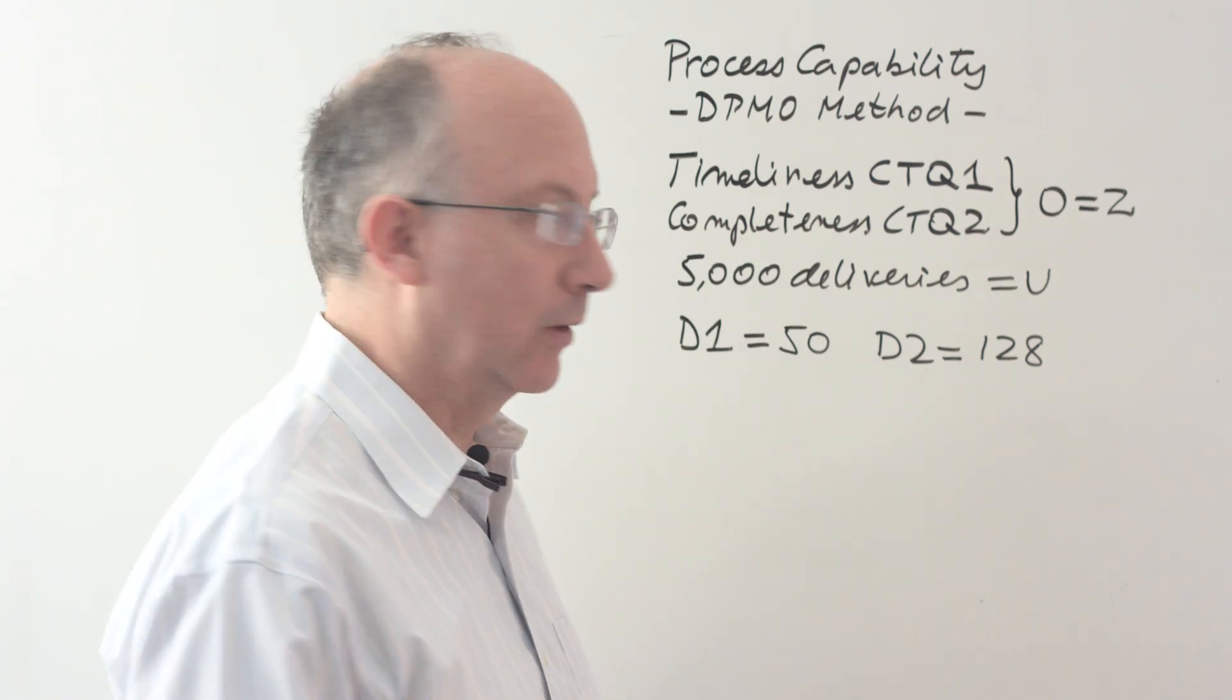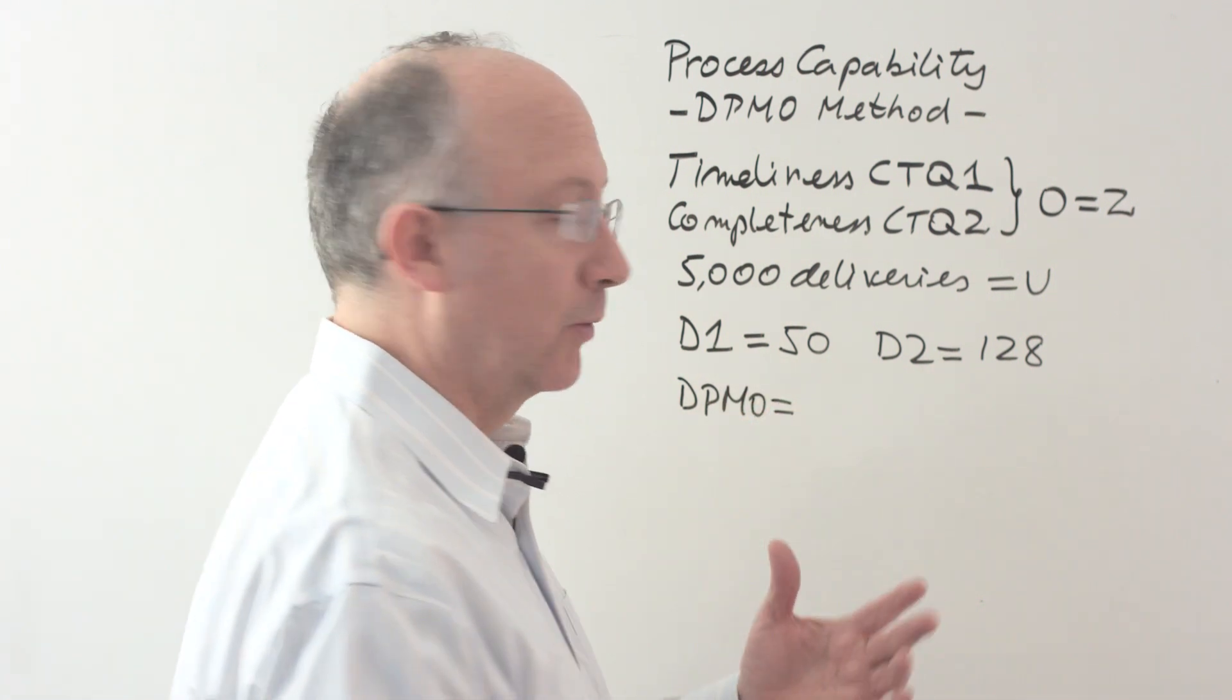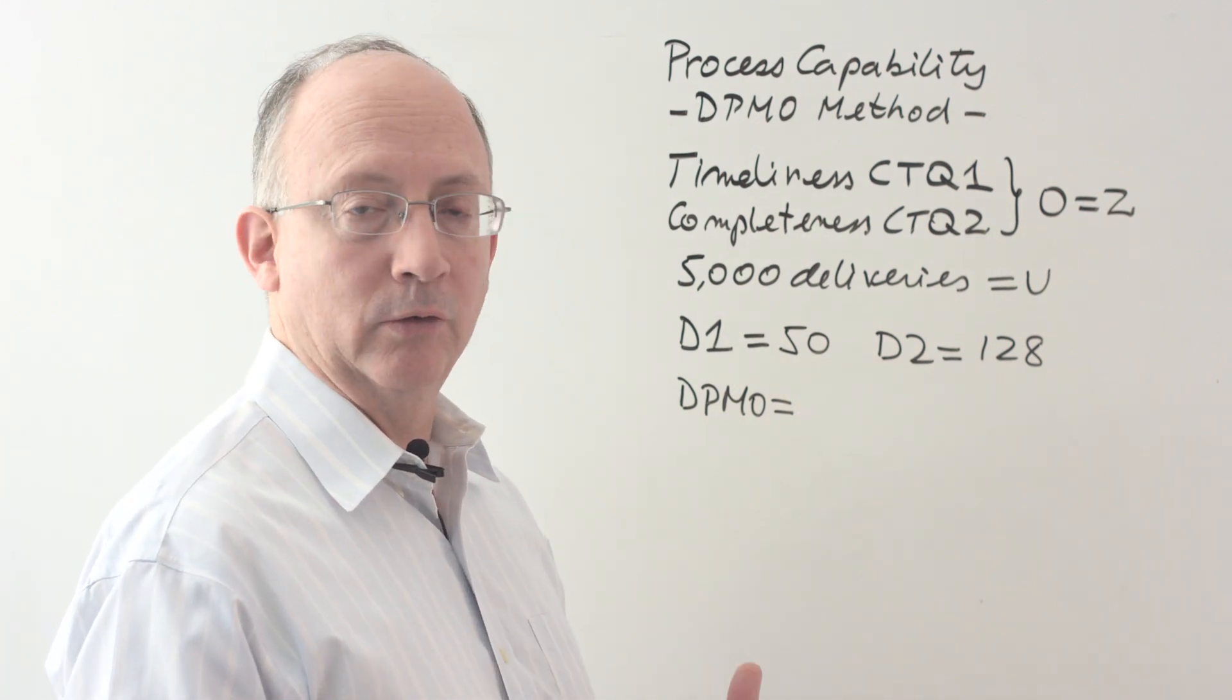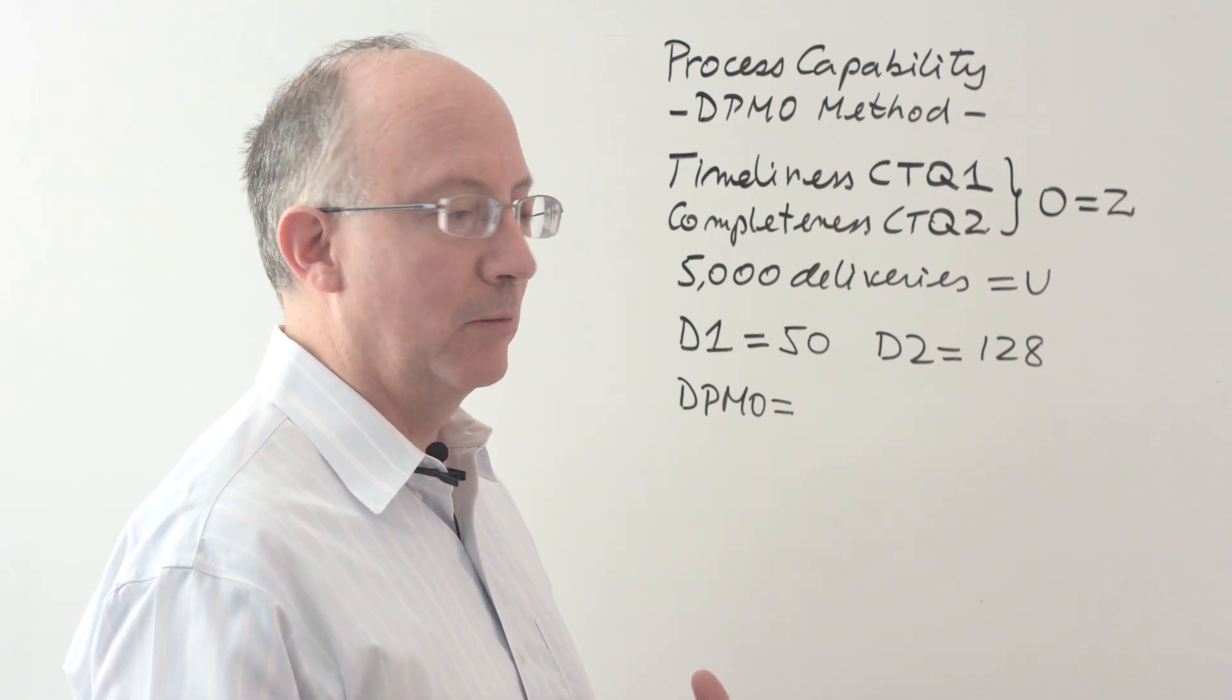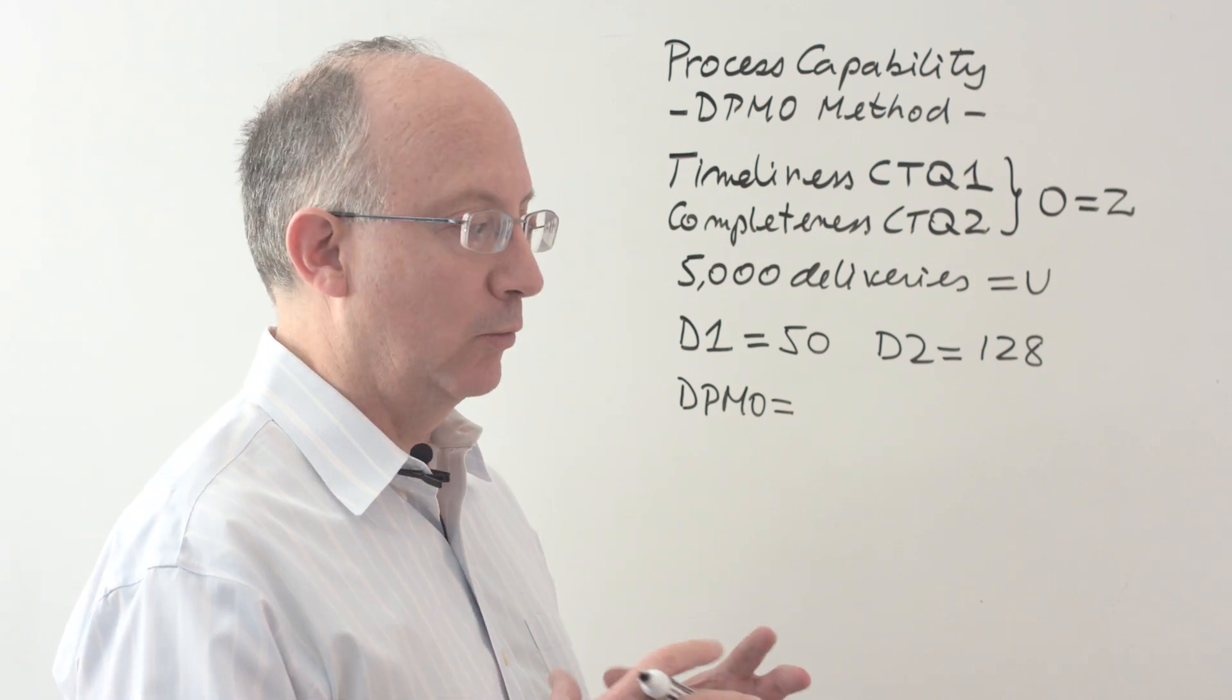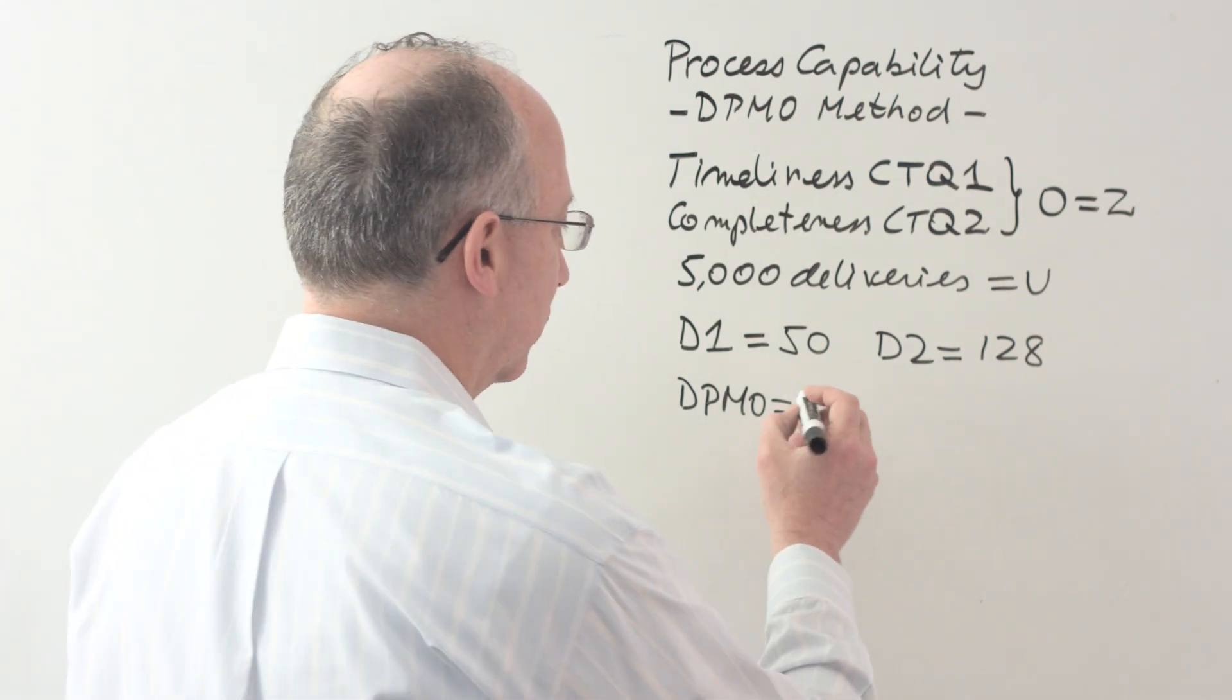The formula goes like this. In order to calculate DPMO, we're always going to multiply whatever fraction. What we're interested in here is to say these two numbers, which represent defects or instances of failure, compared to the total possible number of failures that we may have, what type of ratio do we get? And then, because we're working on a per million metric, we're going to multiply this by a million.